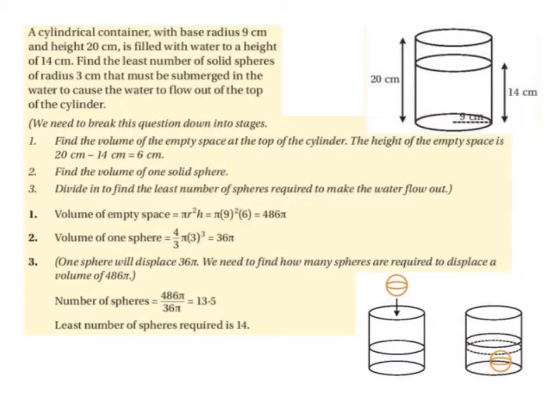A cylindrical container with a base radius 9 cm and a height of 20 cm is filled with water to a height of 14 cm. Find the least number of solid spheres of a radius 3 cm that must be submerged in the water to cause the water to flow out the top of the cylinder.